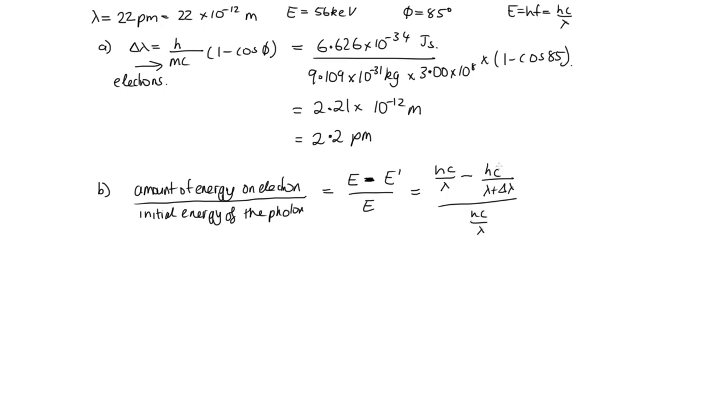Okay, now you can see we've got hc on the top everywhere, so these are going to cancel out. And then to simplify this, it helps if we multiply the top and the bottom both by lambda. So here we'll have lambda over lambda, and then we'll have minus lambda over lambda plus delta lambda. And on the bottom, we'll have lambda over lambda, which is just one. So this is one, that's one. So we can write this as one minus lambda over lambda plus delta lambda.